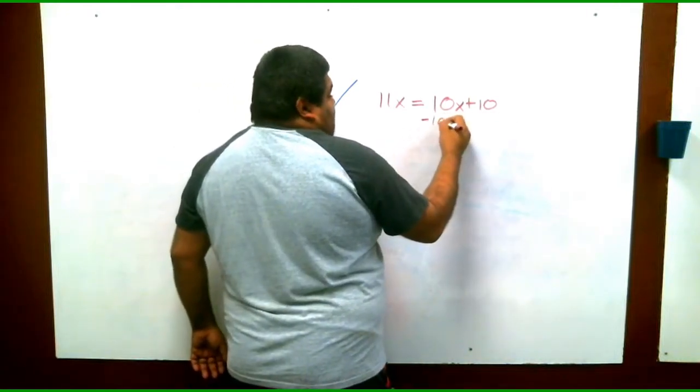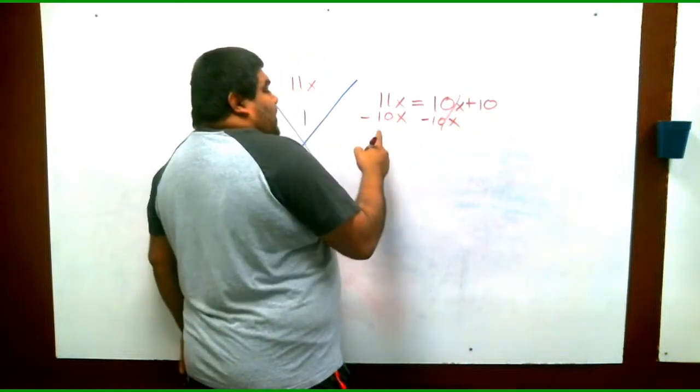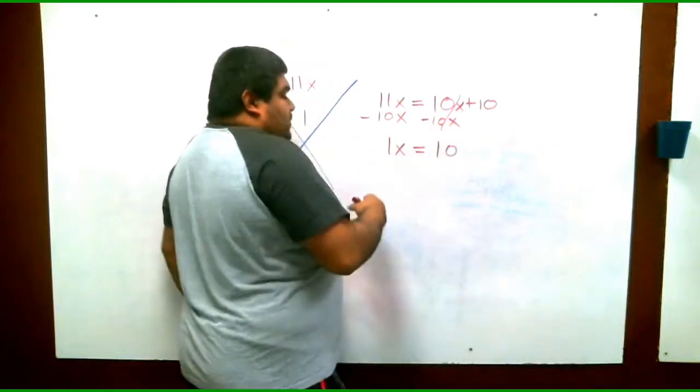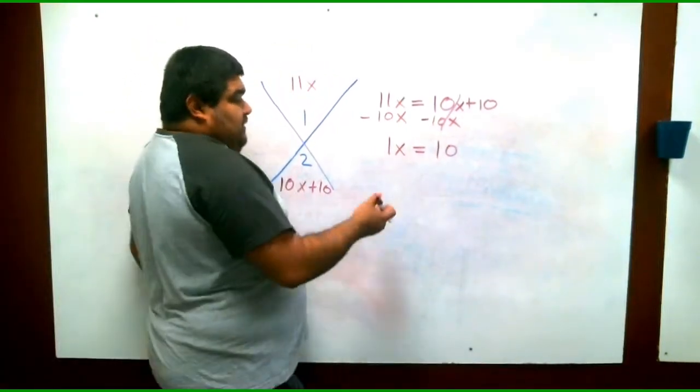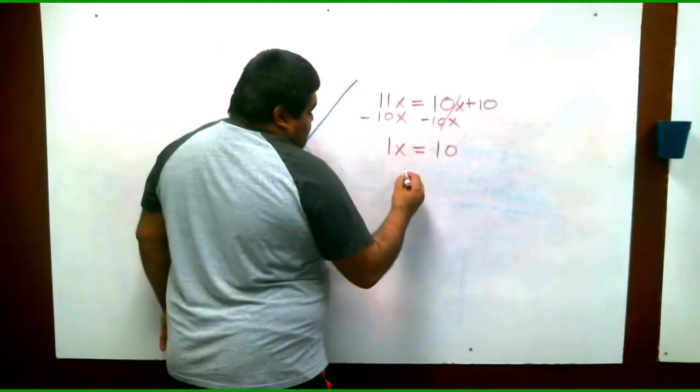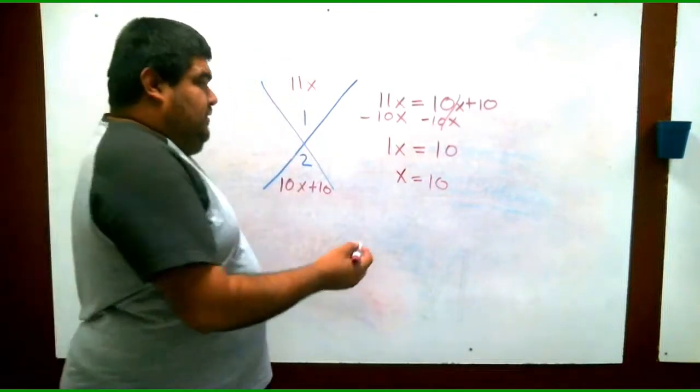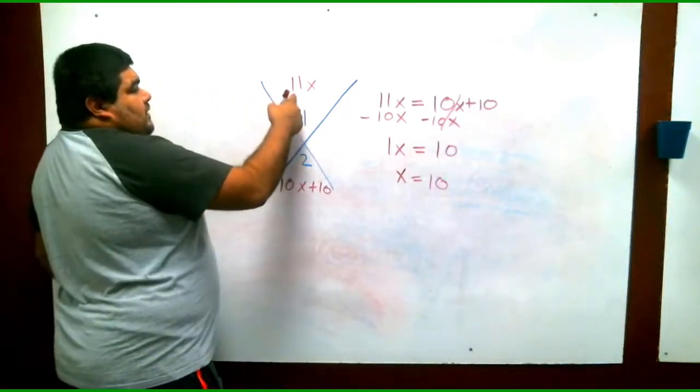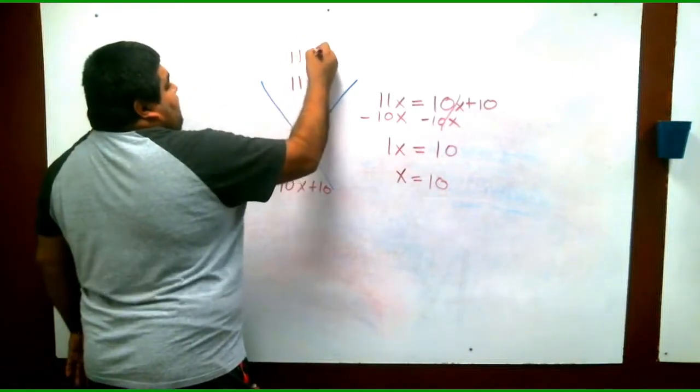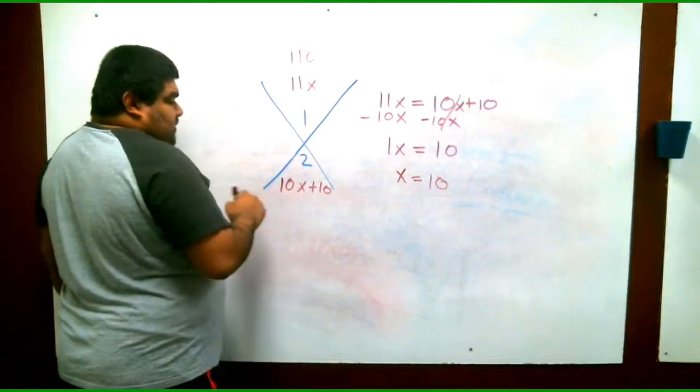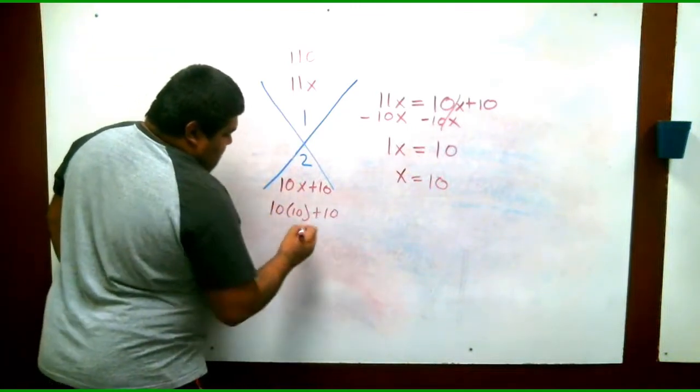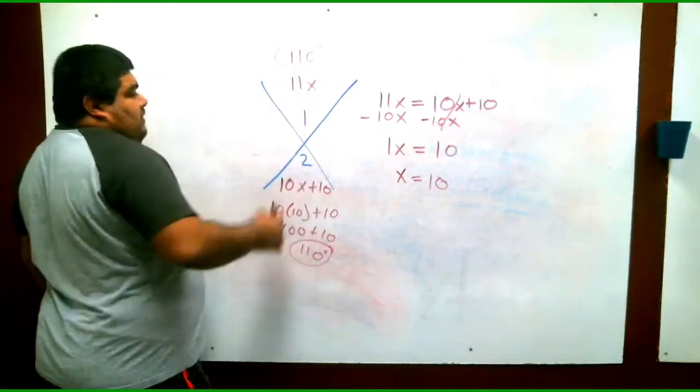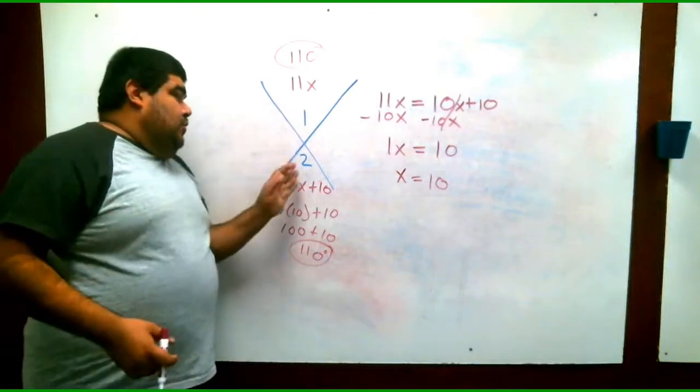We're going to move the 10x because of the whole balancing of equations. So we're going to subtract 10x. We're left with 1x equals 10, right? If you want to put 1x, that's fine. I usually just put x because technically anything times 1 is just itself. So x in a way equals 10. So we know that 11 times 10 is 110. 10 times 10 plus 10. So 10 times 10 is 100. 100 plus 10 is 110. Look at that. 110 on both sides. And that is how you do congruent angles.